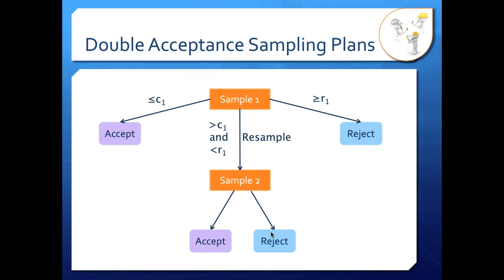In your second sample, you have your accept and reject criteria again — C2 and R2 — and they could be different from your first sample, and they often are. You accept your sample if the combined number of non-conformities from your first and second sample is less than or equal to C2, and you reject if the combined number of non-conformities is greater than C2 or greater than or equal to R2.